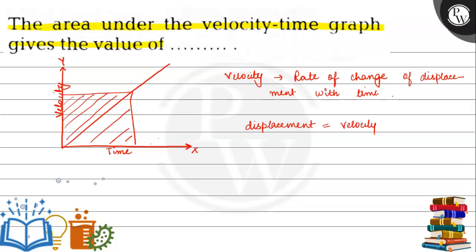Displacement is the shortest path traveled by an object. So, the area under the velocity-time graph represents displacement.